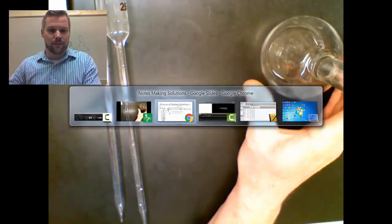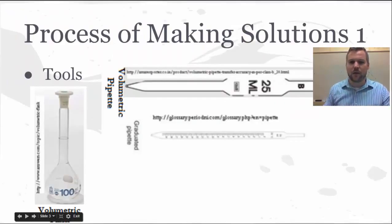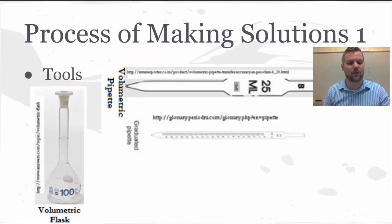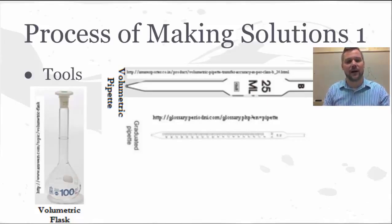That etched line is the mark — if you fill it up with solution to that line, you've made 250 milliliters of solution. You might ask: what if I don't want a 250 mL or 100 mL solution? You need a volumetric flask appropriate for each solution you're making, at least if you want very accurate solutions. These volumetric flasks and pipettes are very good at measuring accurately to that volume.